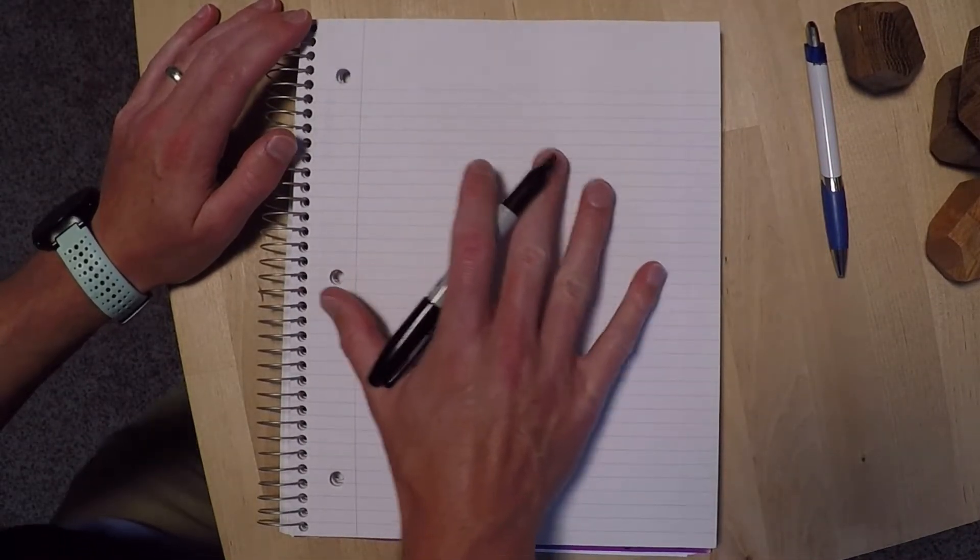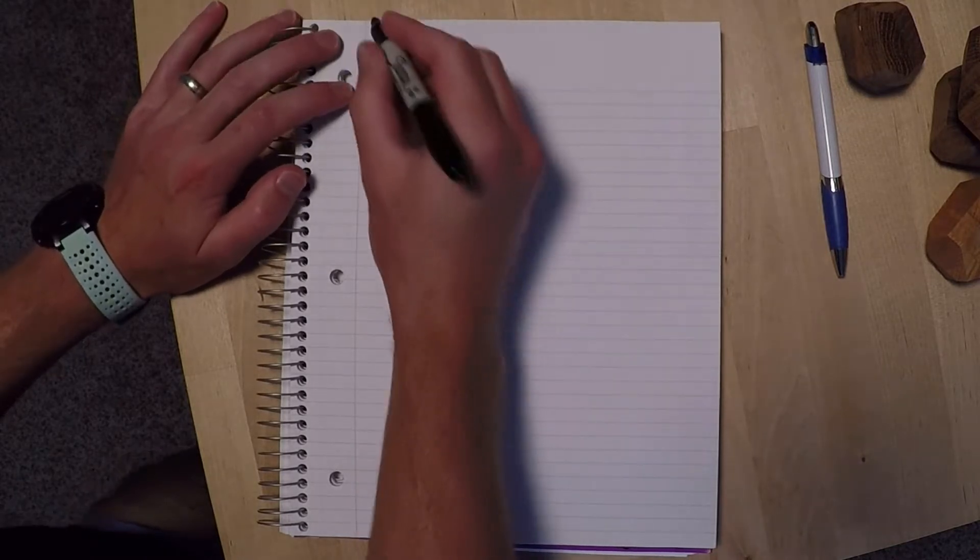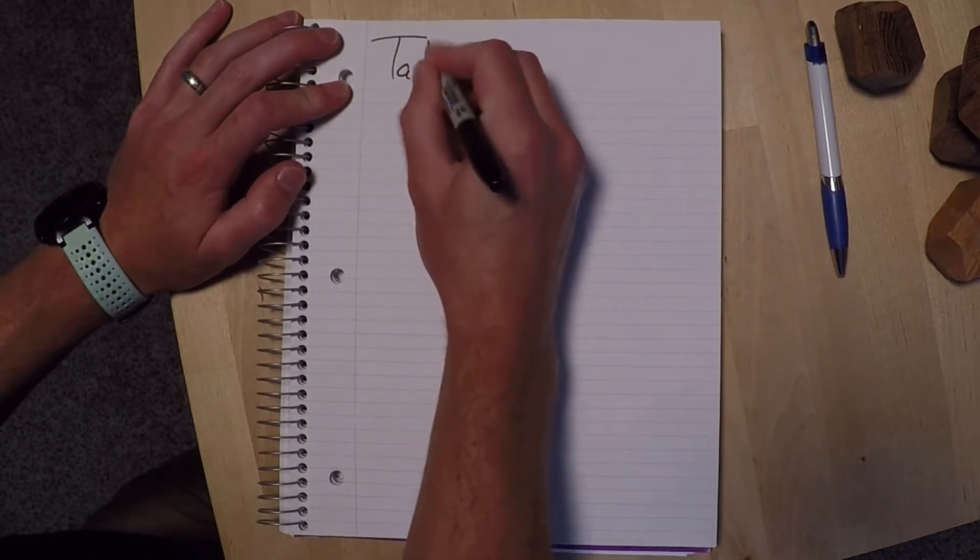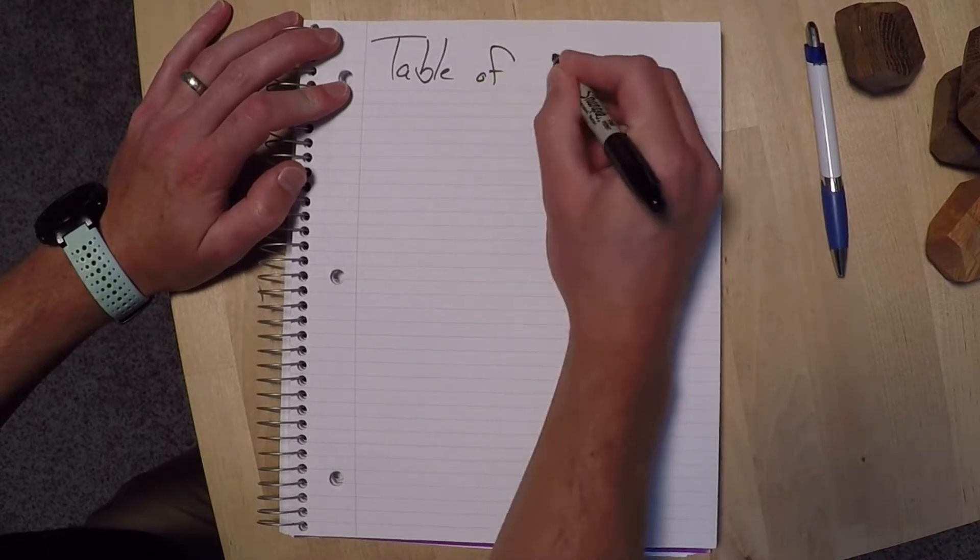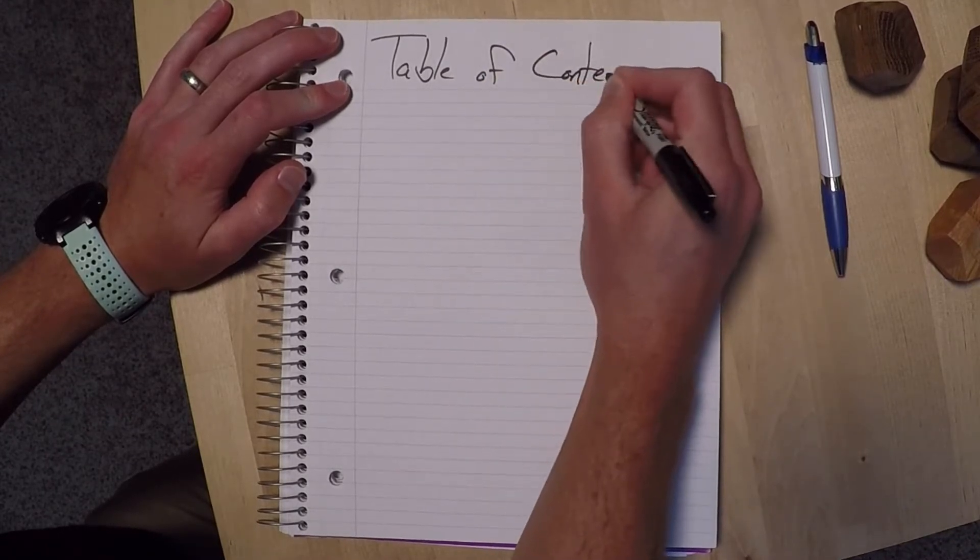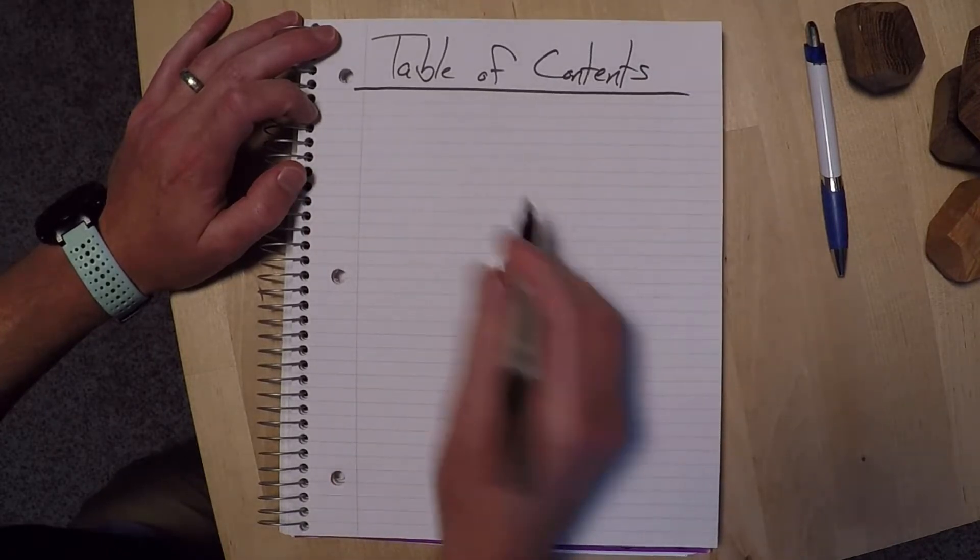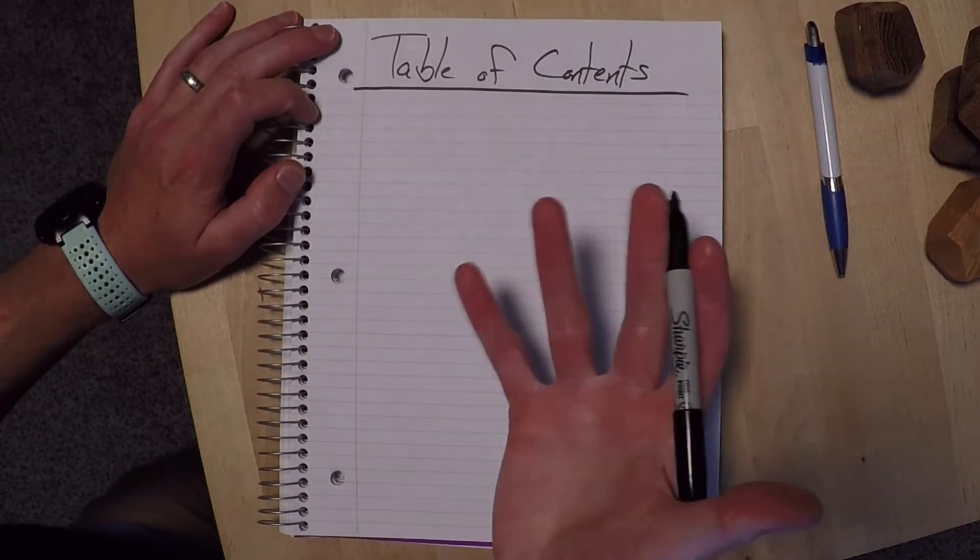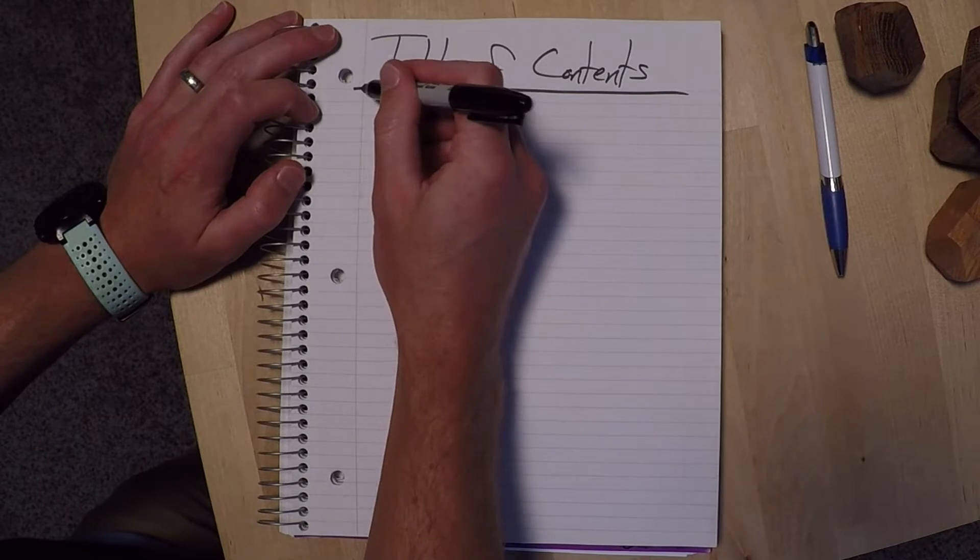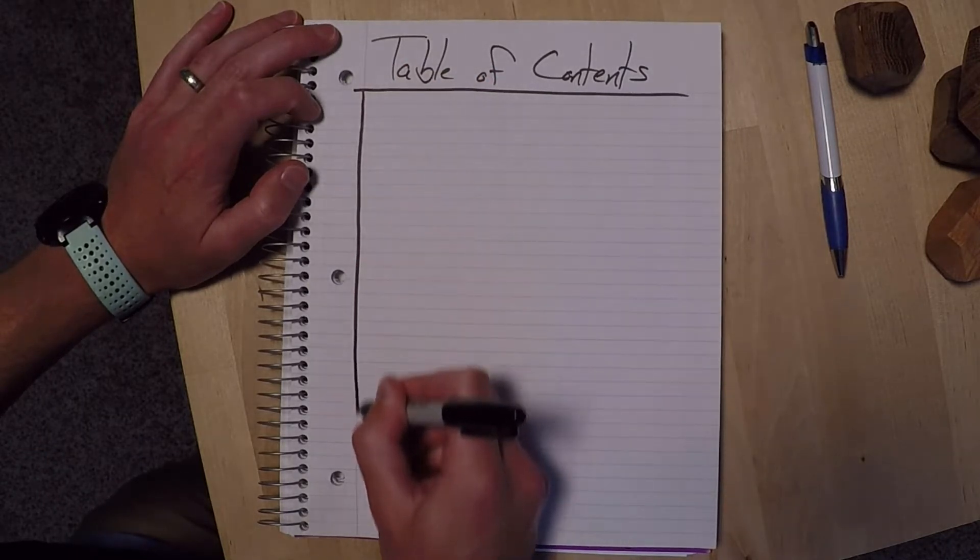And that's going to be our table of contents. So we're going to write up on top, table of contents. And just like in a book, this is going to tell us where all of our notes are. So we're going to draw a couple lines.